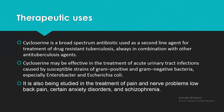Cycloserine may also be effective in the treatment of acute urinary tract infections caused by susceptible strains of gram-positive and gram-negative bacteria, especially Enterobacter and Escherichia coli. It is also being studied in the treatment of pain and nerve problems, low back pain, and certain anxiety disorders and schizophrenia.